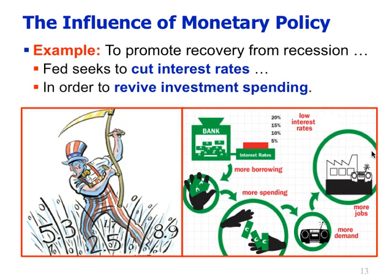For example, when talking about recovering from recession, the Fed seeks to cut interest rates — like Uncle Sam here with his scythe — with the goal to revive investment spending. Lower interest rates will promote more borrowing, more lending from the banking sector, which promotes more spending, which is more demand and ultimately more jobs to recover from the recessionary gap.